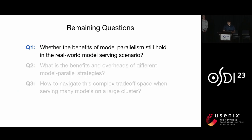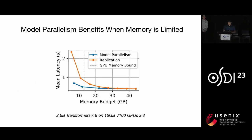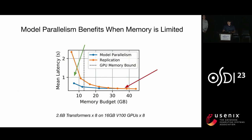We start to investigate the first question by beginning with device memory capacity. We tested how mean latency changes under different memory budgets, using a simulator to generate results that go beyond the memory limit of a single GPU. We can see that model parallelism helps a lot when GPU memory is limited and below the physical memory bound. With more memory, the replication baseline can have more model replicas, and thus the benefit of statistical multiplexing diminishes.